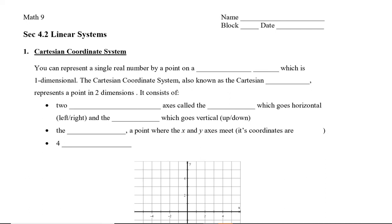Now recall that you can represent a single real number by a point on a number line, which is in one dimension. We have a number line with two arrows, one on each end. We can place zero in the middle and then plot numbers on either side. These numbers can be integers, fractions, or decimals.